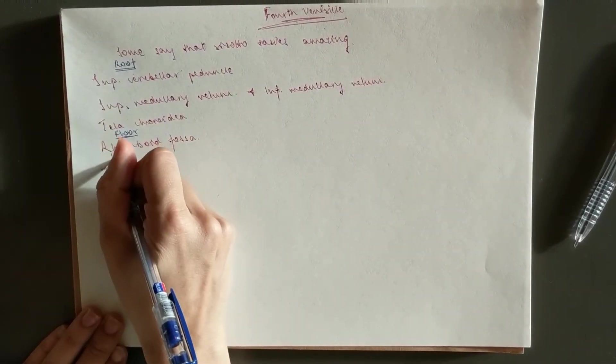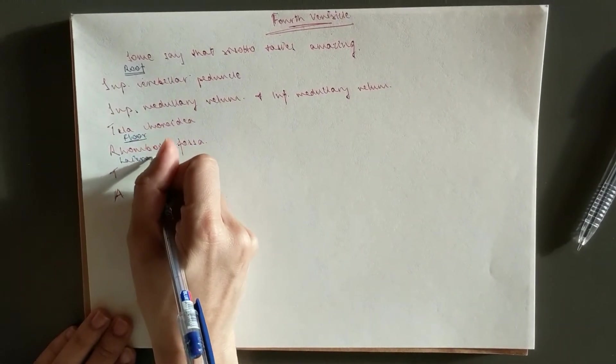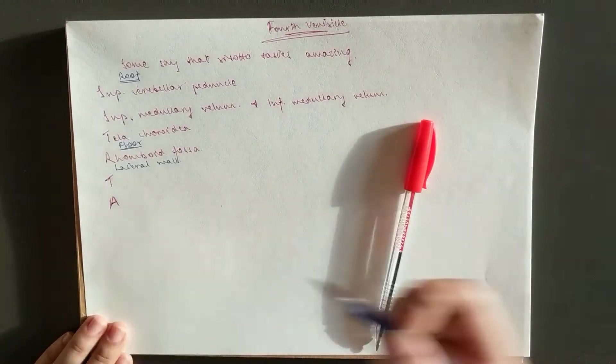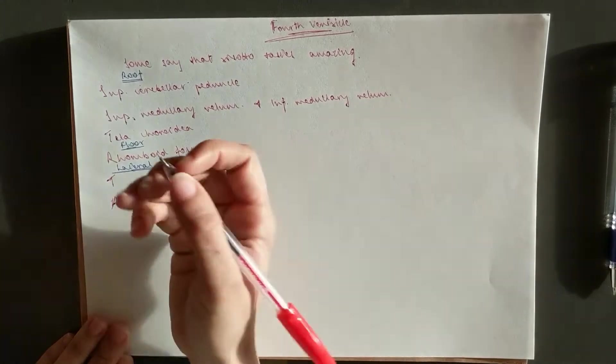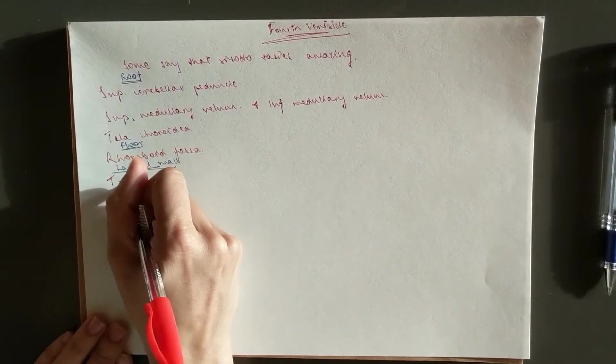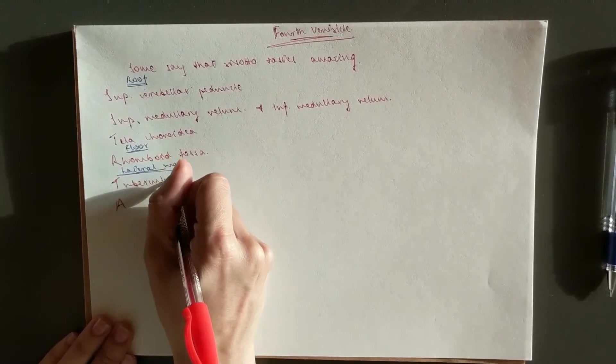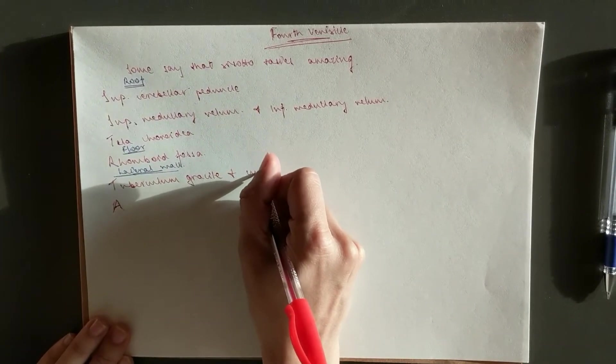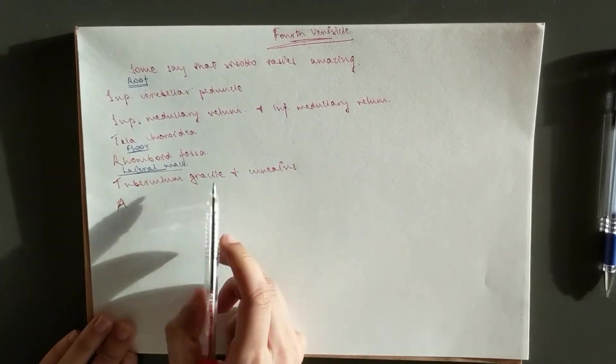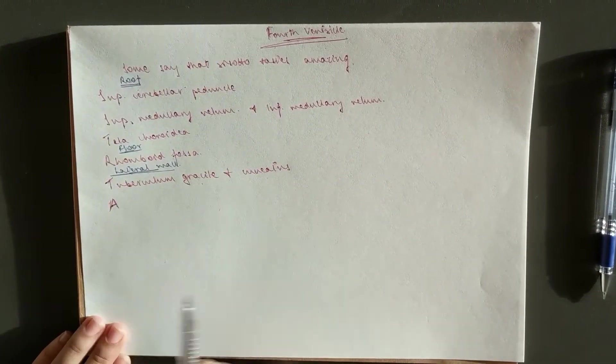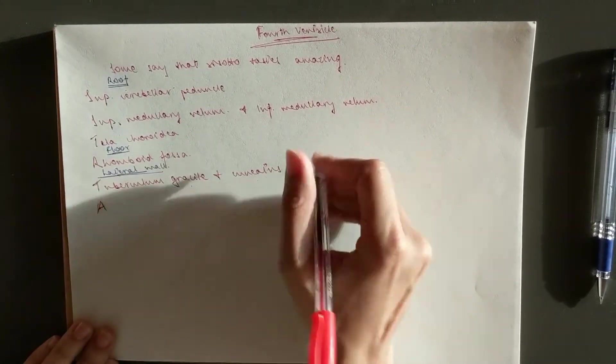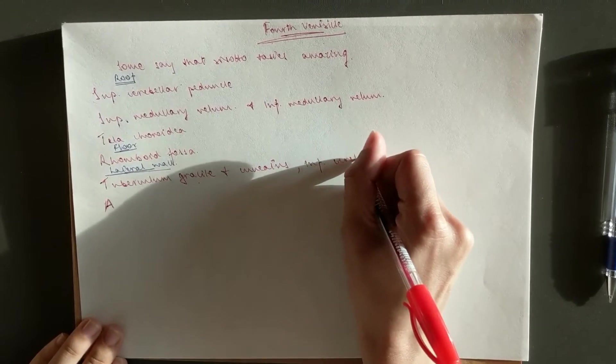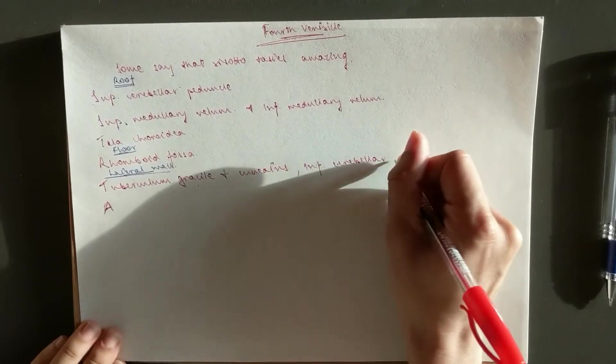Then we have the lateral walls. Then we've got tuberculum grisyl, which you remember is on the medulla, and cuneatus. They form the grisyl and the cuneatus tracts. And you've got the inferior cerebellar peduncle.